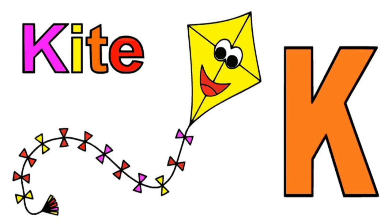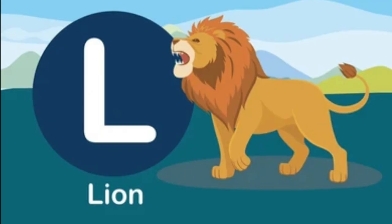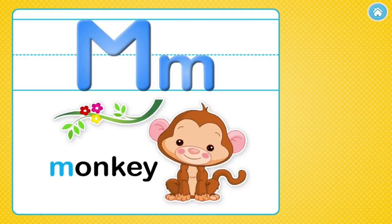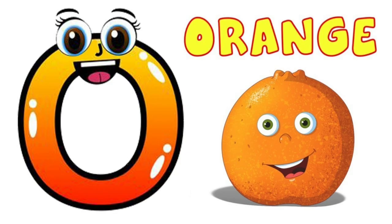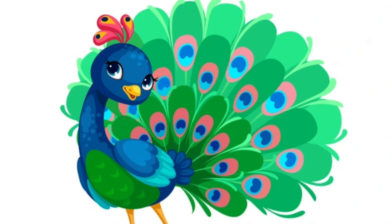Jug means Jug. K is for Kite. Kite means Patang. L is for Lion. Lion means Sher. M is for Monkey. Monkey means Bandar. N is for Nest. Nest means Ghosla. O is for Orange.